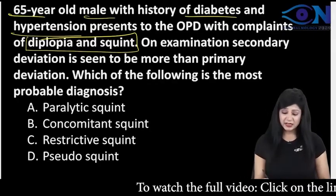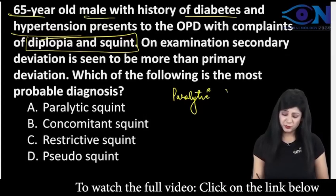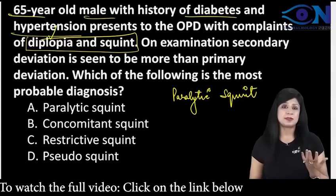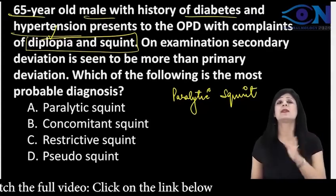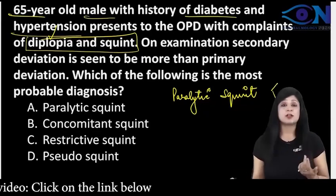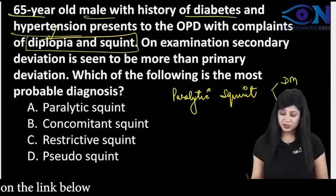Basically, we are having the paralytic variety of squint. Because why? Because this is having diplopia and diplopia is more common in the paralytic squints, though it can be in the non-paralytic variety also. And I am having two important causes of the paralysis - that is diabetes and hypertension - are already there.